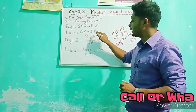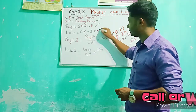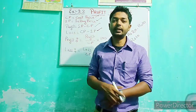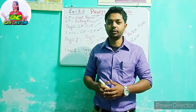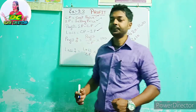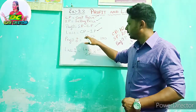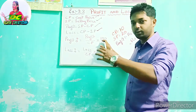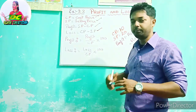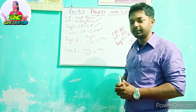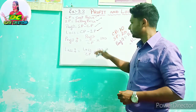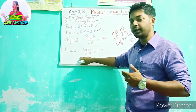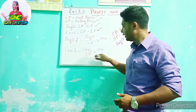Loss equals CP minus SP. So how is profit percent calculated? Profit percent equals Profit divided by CP, multiplied by 100 — we multiply by 100 to convert it to a percentage. Similarly, to calculate loss percent when we incur a loss: Loss divided by CP, multiplied by 100, gives the loss percent.